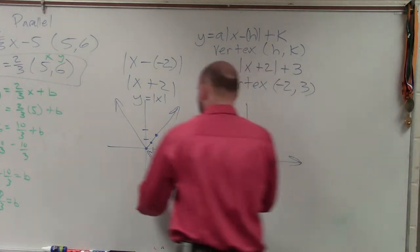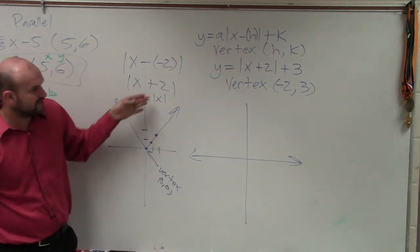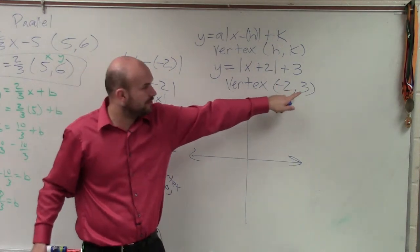Now, this vertex right now is at 0, 0. Well, you guys notice there's no h and k here, right? I'm not shifting left to right. Now my vertex is negative 2, 3. So I go to the left 2, and then up 3.